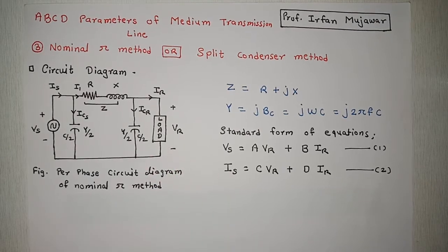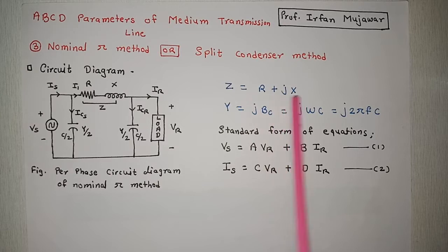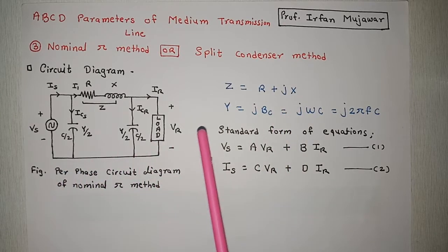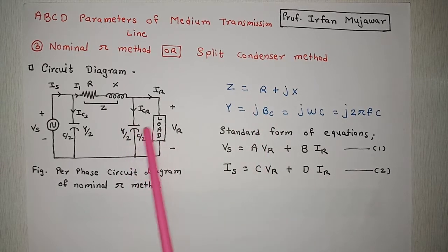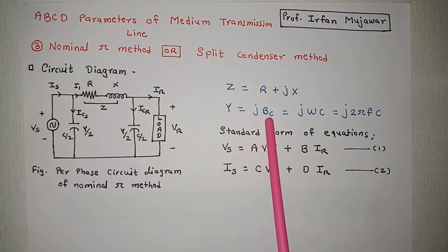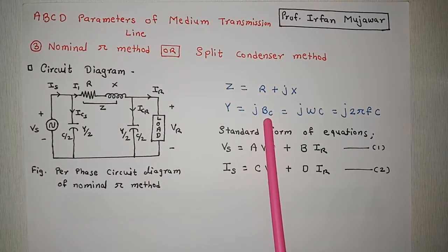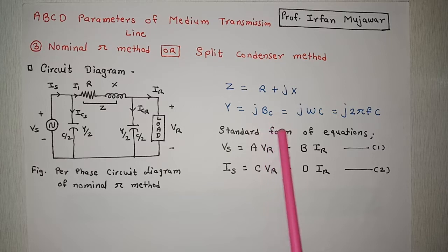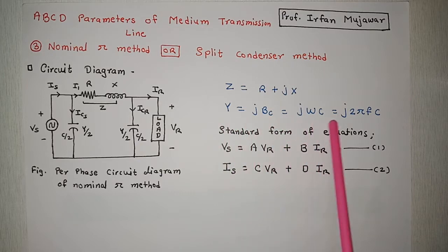For a series RL network, impedance Z is given as R + jX, and admittance Y is given by j·BC for pure capacitance, where BC is the capacitive susceptance which is the reciprocal of capacitive reactance. BC = 1/Xc, and since Xc = 1/(ωC), therefore BC = ωC. So Y = jωC, or in terms of frequency, Y = j·2πfC.